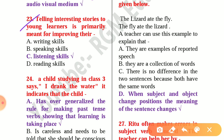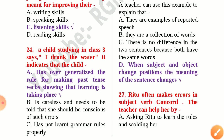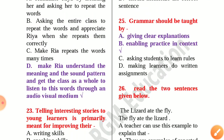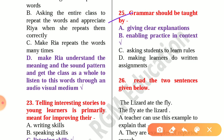Question 23: Telling interesting stories to young learners is primarily meant for improving their listening skills. Question 24: A child starting in class 3 says 'I drank the water' — it indicates that the child has over-generalized the rule for making past tense verbs, showing that learning is taking place. Number 25: Grammar should be taught by enabling practice in context. Option B is the correct answer, not option A.